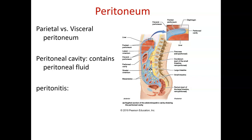Peritonitis can happen from an outside source — a stab wound, gunshot, or opening from the outside introducing bacteria. Or it can happen internally — maybe a blocked intestine or a burst appendix. So you can get peritonitis from internally or externally.